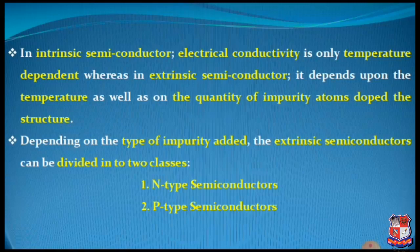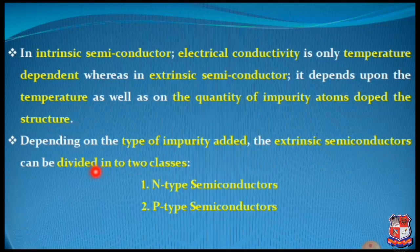Depending on the type of impurity — and this is very much important — the type of impurity which we have added means that extrinsic semiconductors can now be divided into two classes: N-type semiconductors and P-type semiconductors. This is our upcoming lecture.